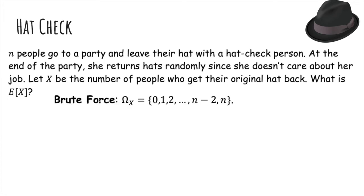So we can try doing brute force. The range of x will be somewhere between zero and n. It's missing n minus one, but think about why. If we want the probability that all n people get their hat back, it turns out that answer is one over n factorial. Then if we try to find the probability that zero people get their hat back, this is already really hard. And so we're going to try using linearity of expectation.